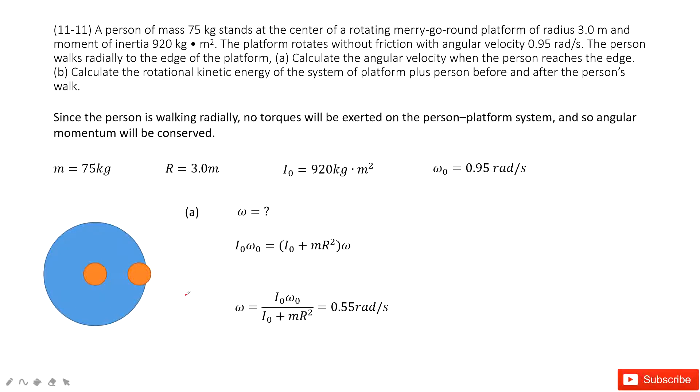So we consider the initial angular momentum. It just comes from the merry-go-round, so use I times omega.